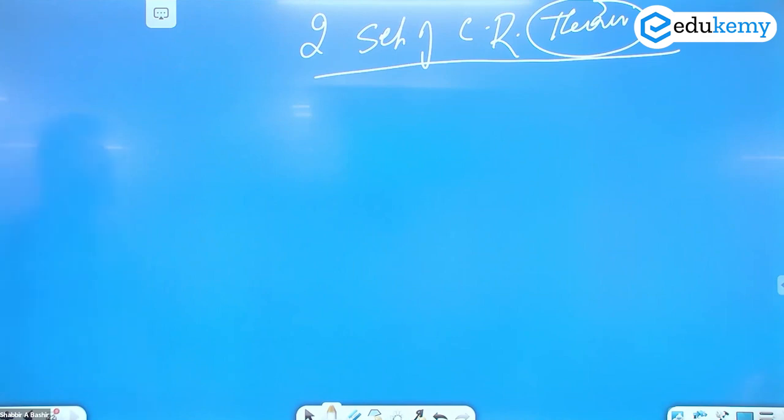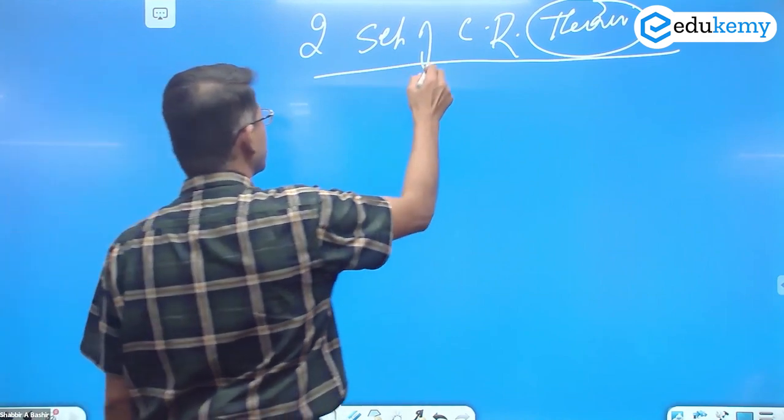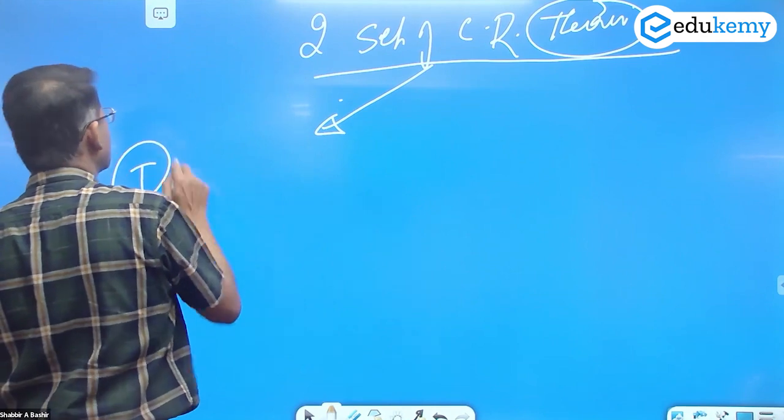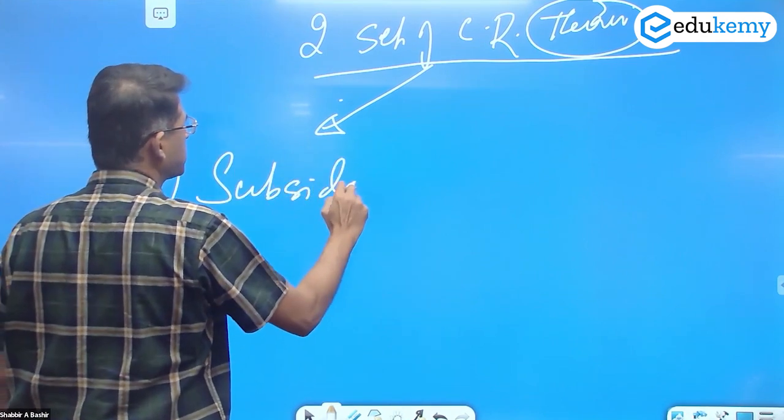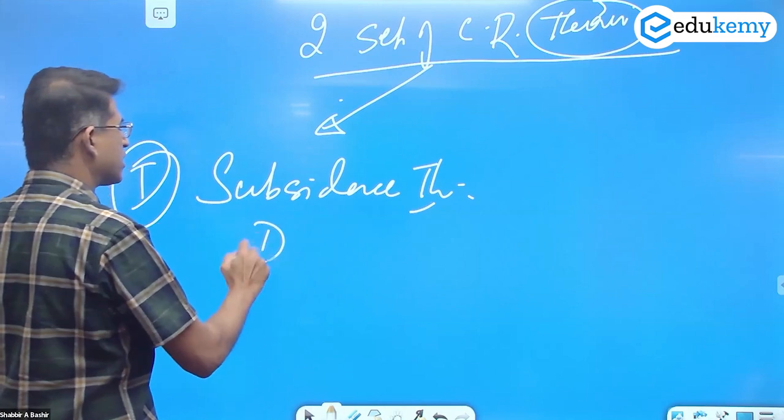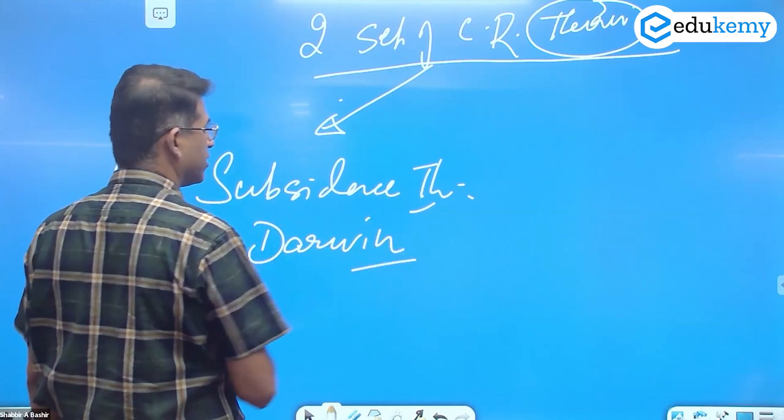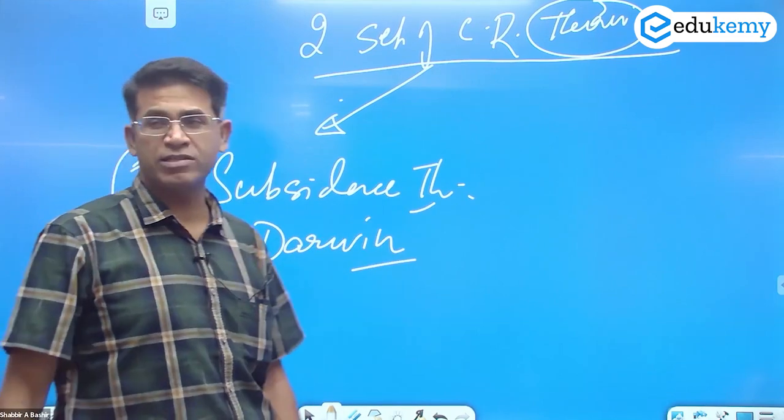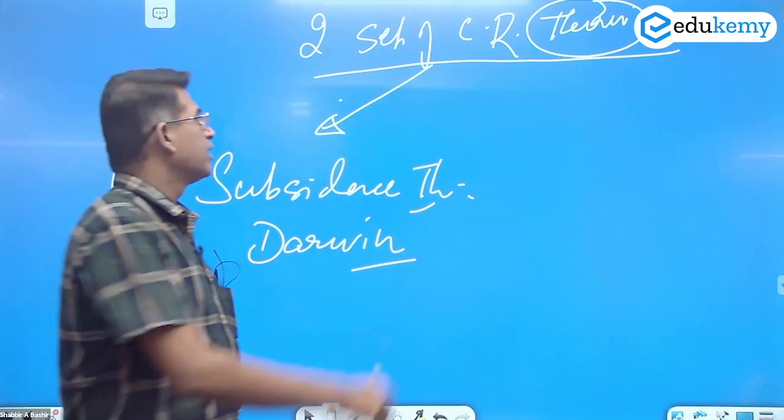There are two sets of coral reef theories. One category of theory is called the subsidence theory. This was given by Darwin, Charles Darwin, the same man who gave us the evolution theory.